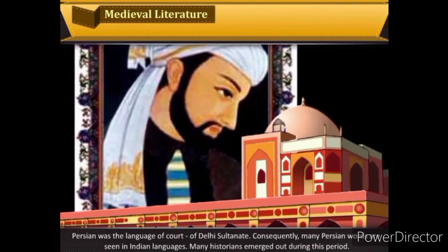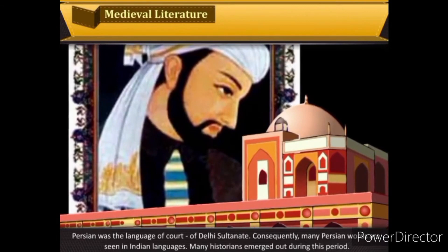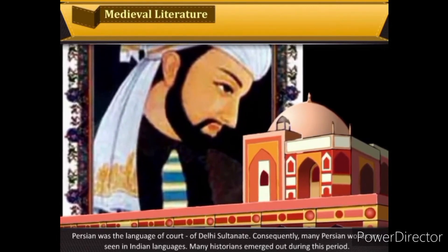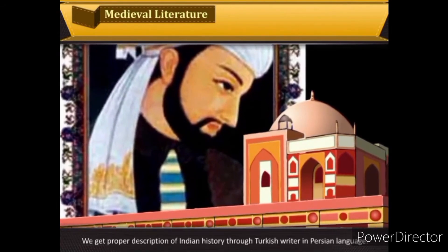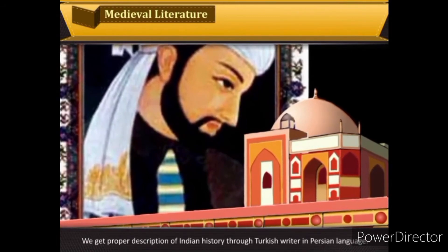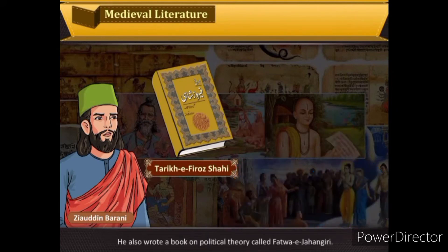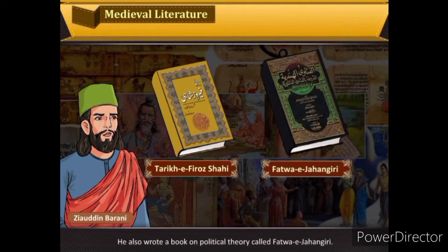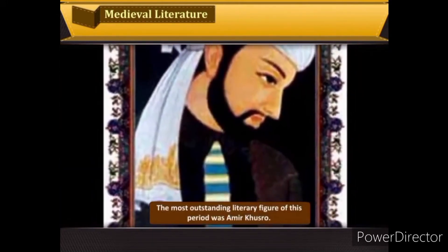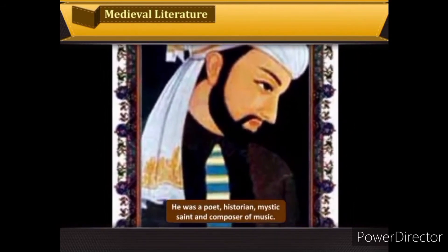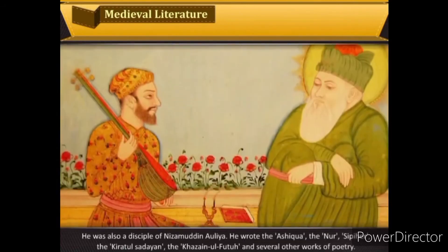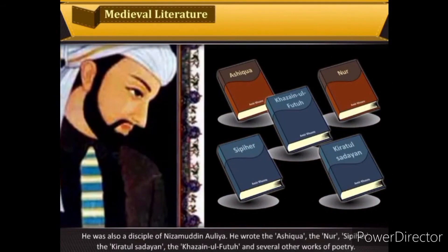Persian was the language of the court of the Delhi Sultanate, and consequently many Persian words entered Indian languages. Ziauddin Barani wrote the Tarikh-e-Firoz Shahi, giving a detailed account of the reign of the Khilji and Tughlaq kings, and also wrote a book on political theory called Fatwa-e-Jahangiri. The most outstanding literary figure of this period was Amir Khusro — a poet, historian, mystic saint and composer of music. He wrote the Ashiqa, the Nuh Siphihr, the Qiran us-Sa'dayn, the Khaza'in ul-Futuh, and several other works of poetry.